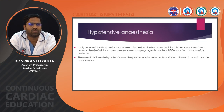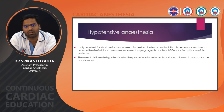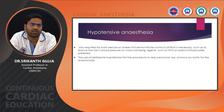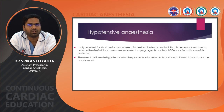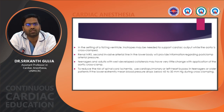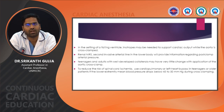Hypotensive anesthesia is only required for short periods, such as reducing blood pressure on cross clamping, using NTG or SNP. The use of deliberate hypotension allows lax aorta for the anastomosis. In the setting of a failing ventricle, inotropes may be needed to support cardiac output while the aorta is cross clamped.